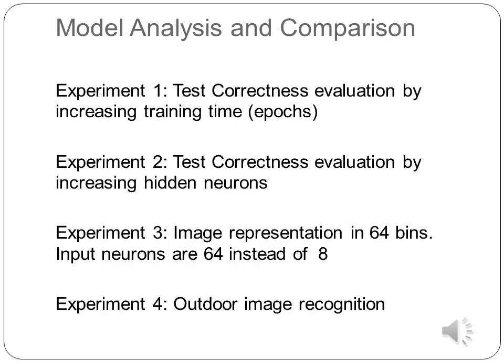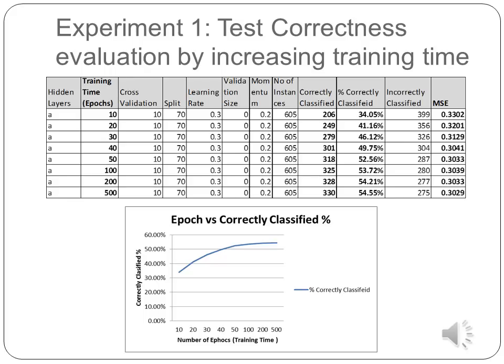I did four experiments to evaluate the test correctness of the model. First, by increasing the training time. Second, by increasing the number of hidden neurons. In the third experiment, the image is represented into 64 bins instead of 8 bins. In the fourth experiment, outdoor images are taken and represented with altogether different attributes.